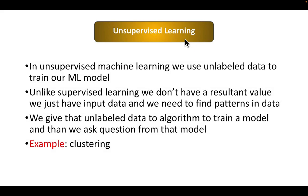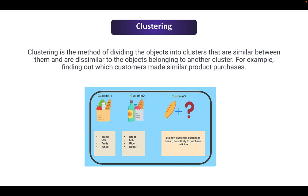Now let's look at unsupervised machine learning. In unsupervised machine learning, we use unlabeled data to train our model. Unlike supervised machine learning, we don't have a result value — we just have the input data and we need to find patterns in that data. We give the unlabeled data to our algorithm to train a model and then ask questions from that model. An example of unsupervised machine learning is clustering.